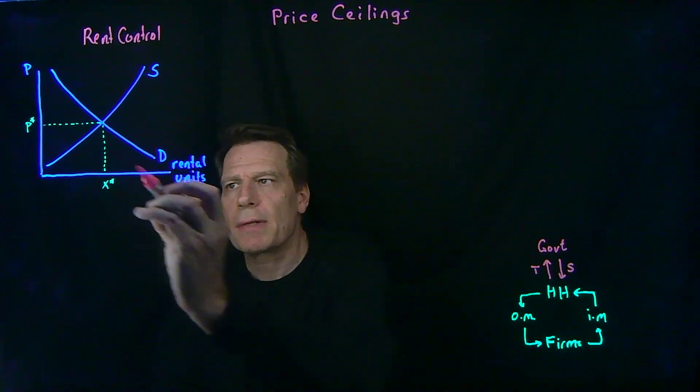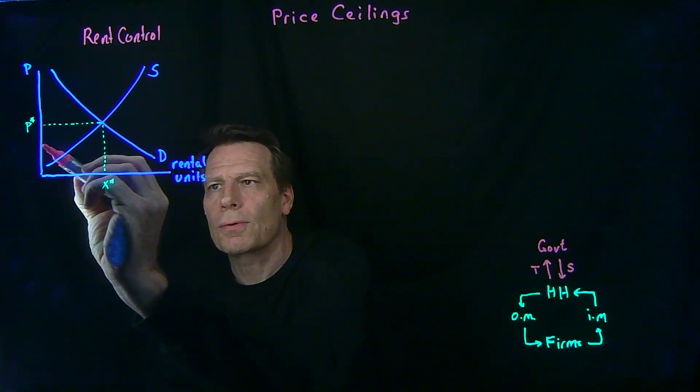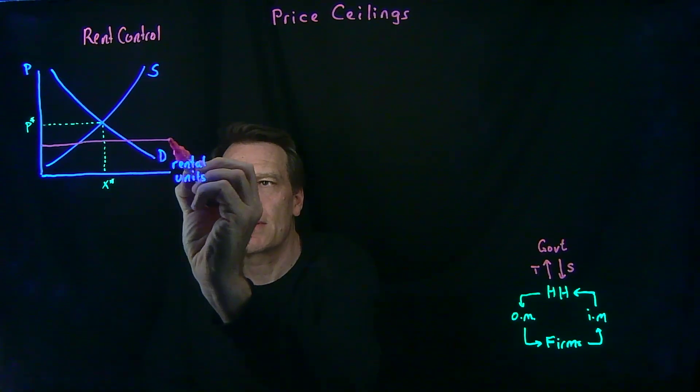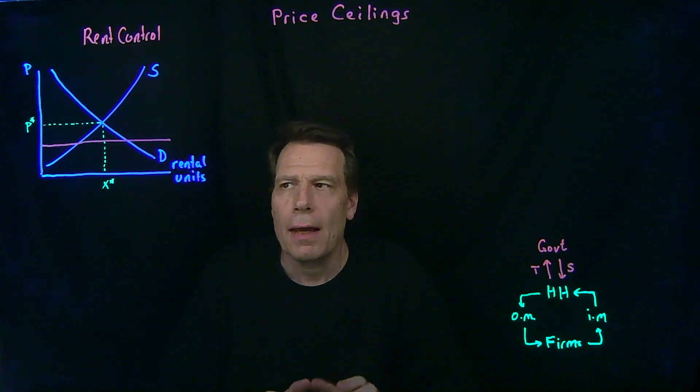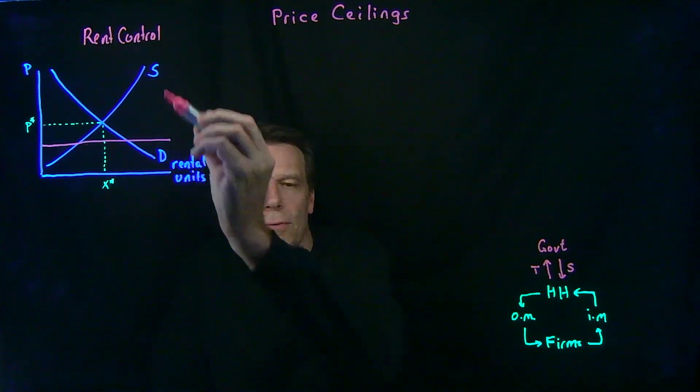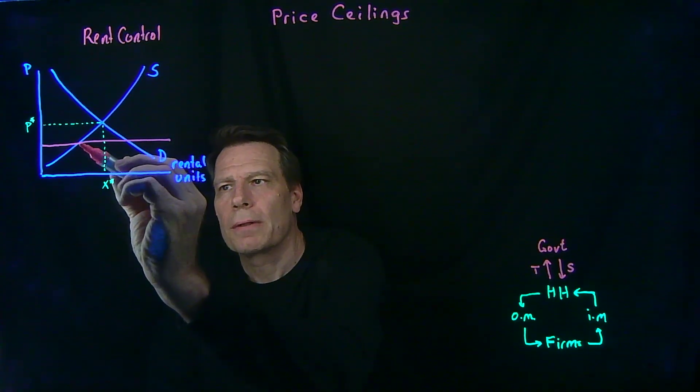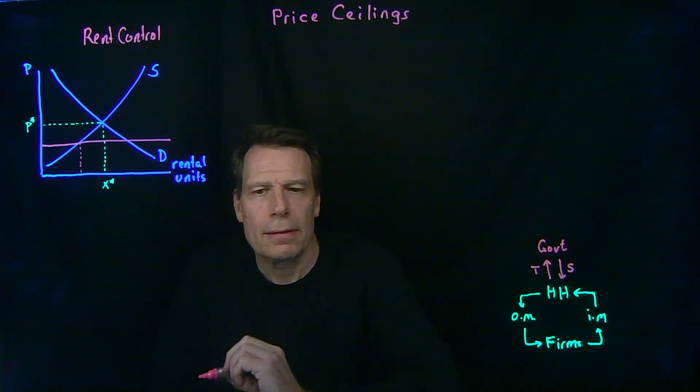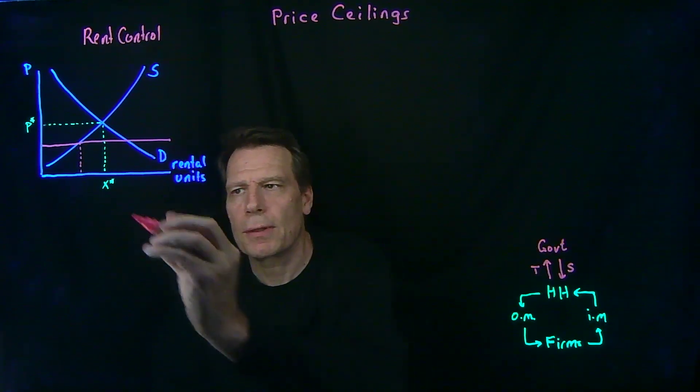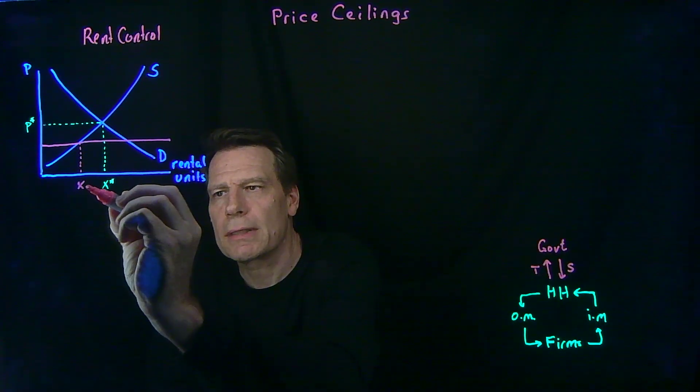So suppose the government sets rent control or the price ceiling on rental units at this level. Now what will happen in the picture? Firms or landlords will want to supply this many units of rental units. So this will be the quantity supplied.